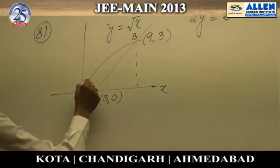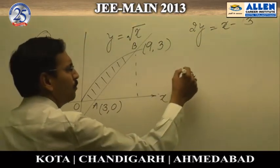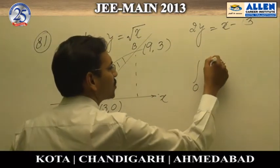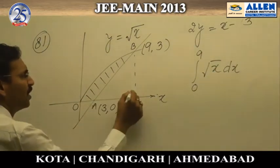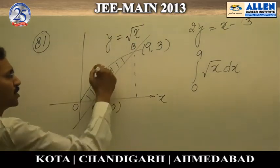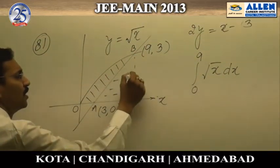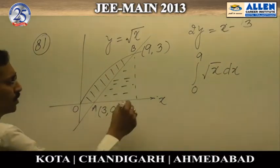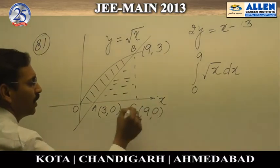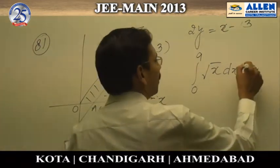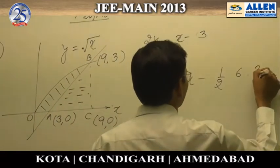We need to calculate the shaded area. To do so, we integrate root x from 0 to 9, which gives the area bounded by the origin, the curve, the x-axis, and the line. We then subtract the area of the triangle. Point C has coordinates (9, 0), and the area of the triangle is half times base times height, where the base is 6 and the height is 3.